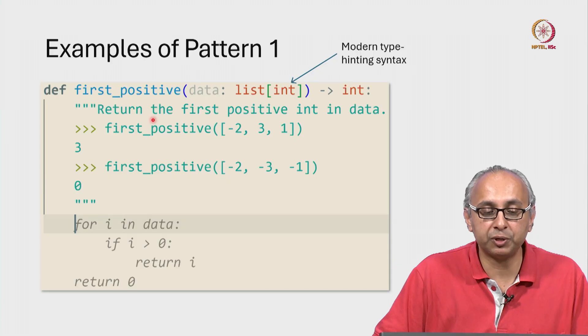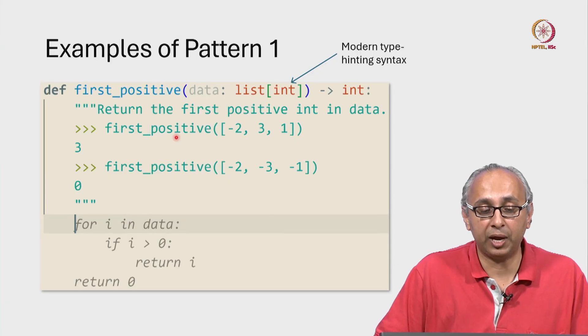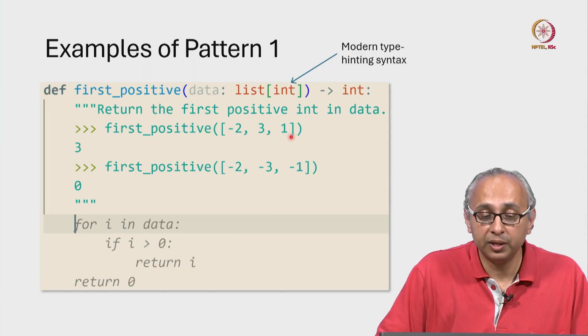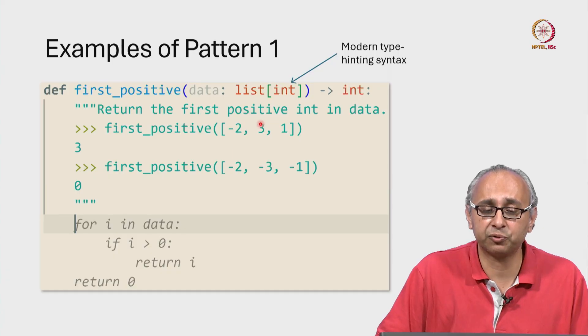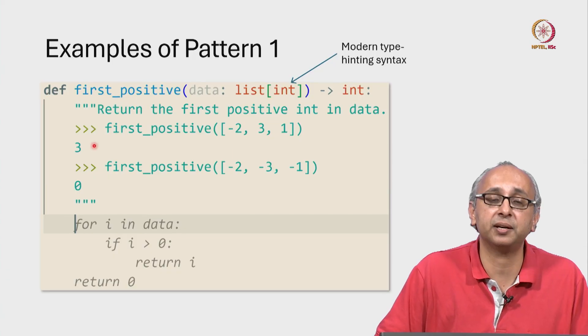Anyway, this function is supposed to return the first positive int in data. So, as an example, if we have these three integers, the first positive integer in this list starting from the left end is of course 3. So, the doc test tells us that on this input the expected answer is 3.